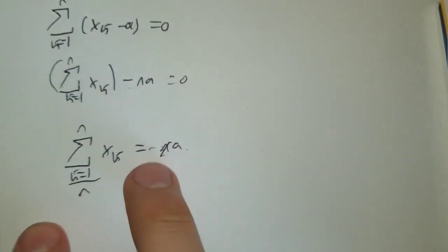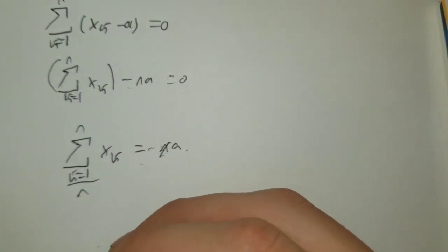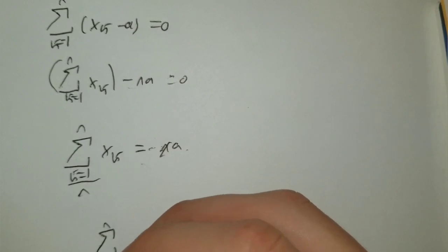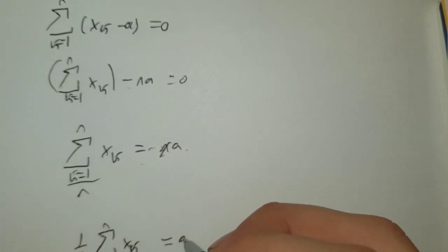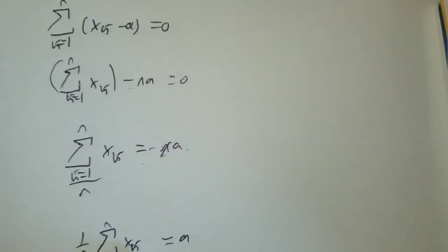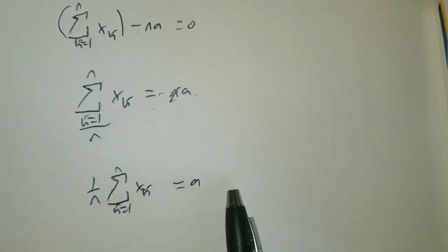Thereby the series of all the data, the data from k equals one to n, divided by how much data there is which is n, is equal to a, which is just what we have written here.